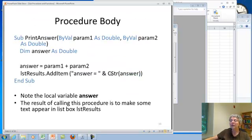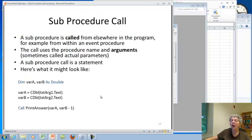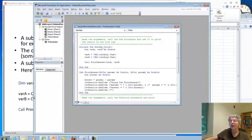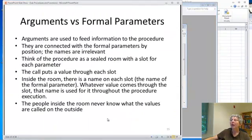So, the procedure body is the actual code that we write and any local variables. And the call is what happens elsewhere. So, like here, for example, this is the definition of this procedure print answer. This is the call.